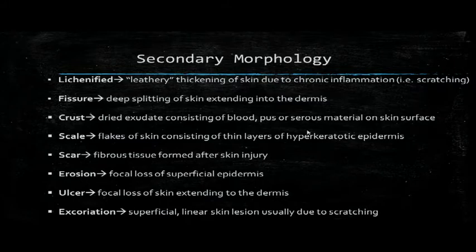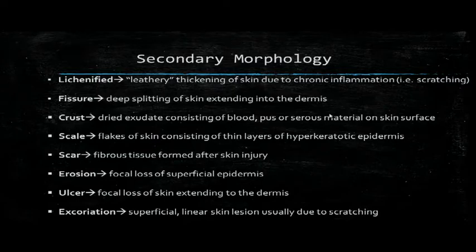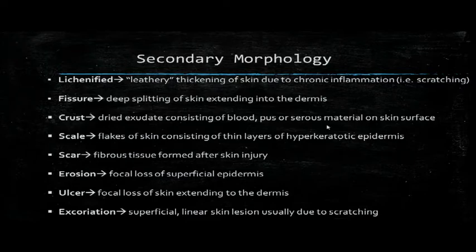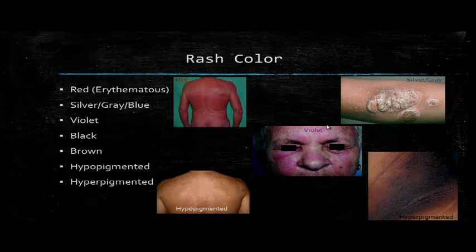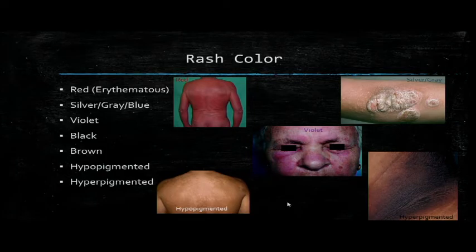Secondary morphology refers to changes in the primary lesion occurring due to natural progression, infection, scratching or picking, or even healing. Lichenification, which I showed you earlier, is commonly seen in eczema after a lot of scratching, making the skin really thick. Scales are similarly seen in eczema or psoriasis. Other secondary changes include scars, erosions, and excoriations, which are typically iatrogenic from scratching lesions. Rash color is also important to describe.